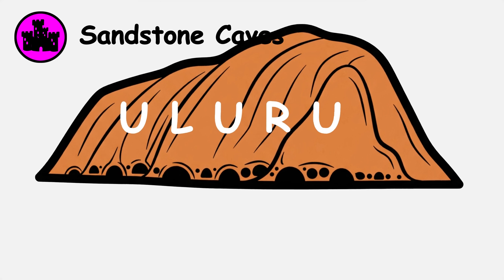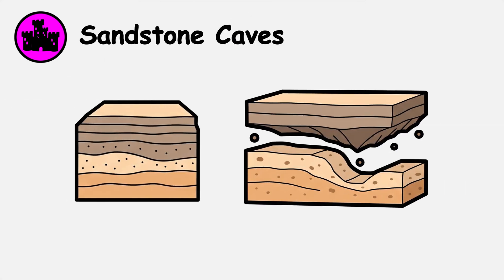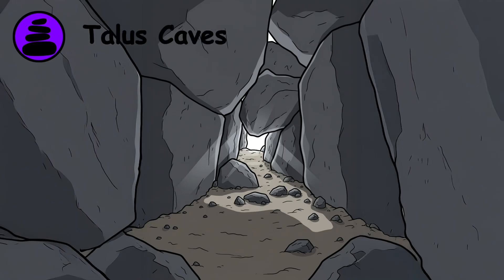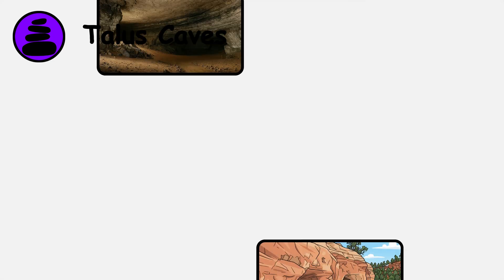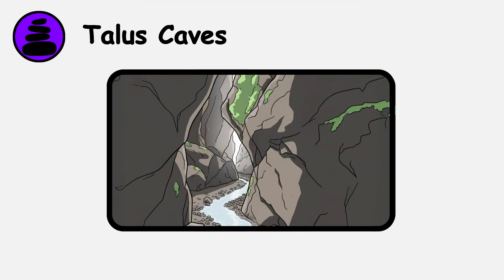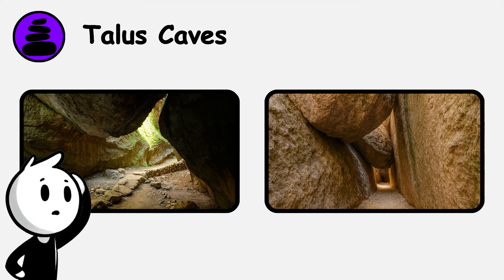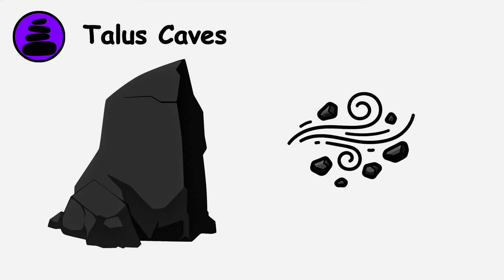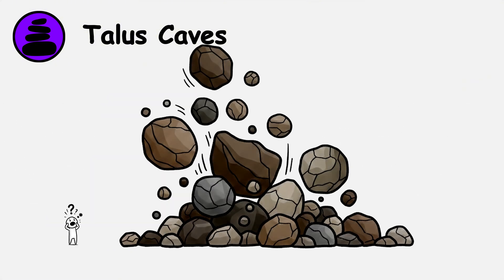These form where layers of varying hardness meet, with softer layers eroding faster to create undercuts. Talus Caves. When massive boulders tumble from cliff faces and pile haphazardly, they create void spaces between them. Unlike other cave types, talus caves form chaotic three-dimensional mazes. In California, Pinnacles National Park contains extensive talus cave systems formed when erosion undermined massive volcanic blocks. As supporting material washed away, giant boulders collapsed into jumbled piles.